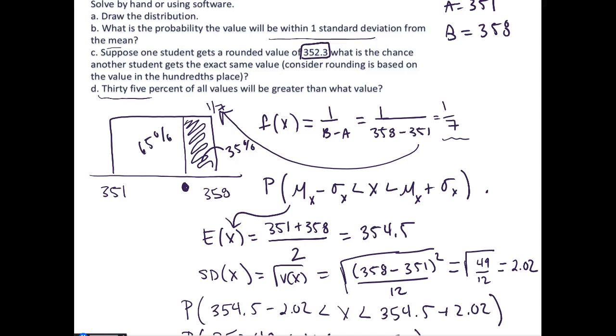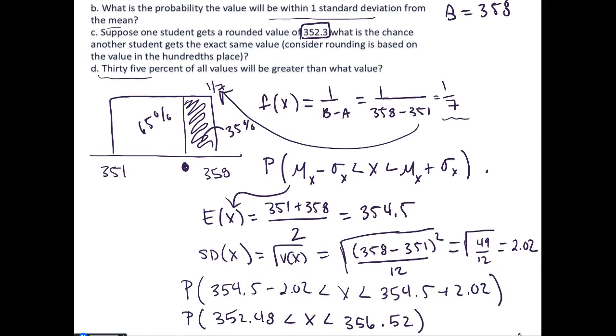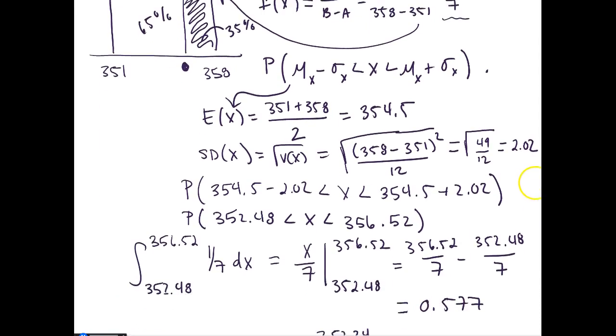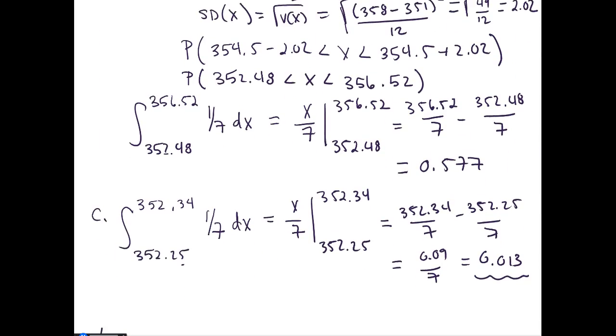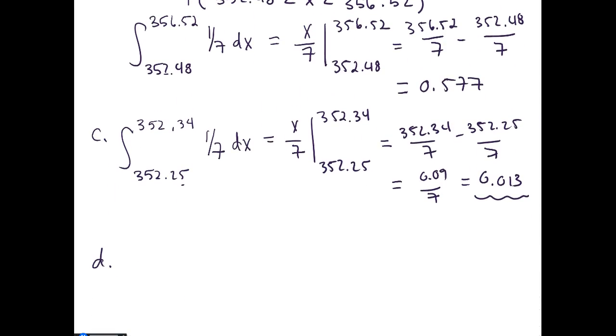In order to find this, we need to calculate the 65th percentile. That means we will calculate from 351, our lower bound, up to a place value of x_0.65, and integrate over our PDF. This will have to equal 0.65.